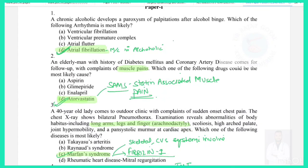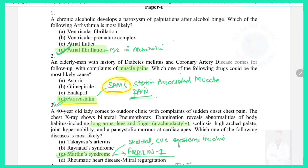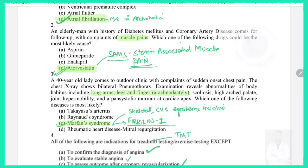Question 2: An elderly male with diabetes mellitus and coronary artery disease comes for follow-up with a complaint of muscle pain. The most likely drug causing this is atorvastatin, because statins lead to statin-associated muscle pain. So the answer is atorvastatin.